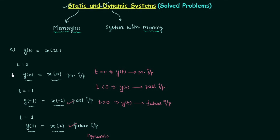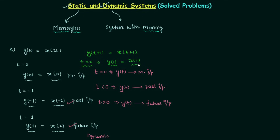There is one thing you must know: just as inputs have future, past, and present values, so do outputs. For example, if the relation is y(t+1) = x(t+1) and you make t equal to 0, you get y(1) = x(1). Here y(1) is a future output and x(1) is a future input — the future output depends on the future input at the same time instant, so the system is static in nature.